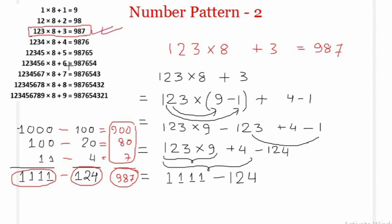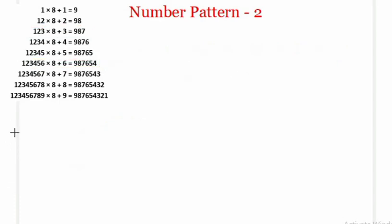Now let's see how this works for row 6: 123456 × 8 + 6 = 987654. Let's verify this. As before, in this particular term 123456, we have 123456 × 8 + 6 = 987654.